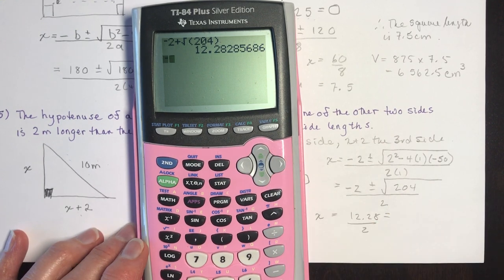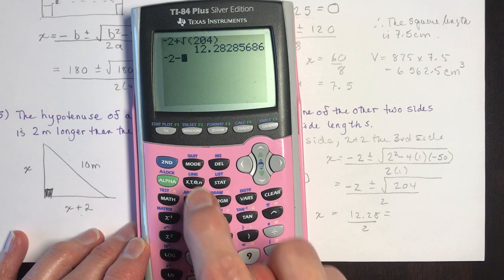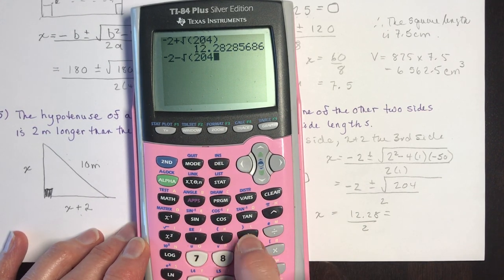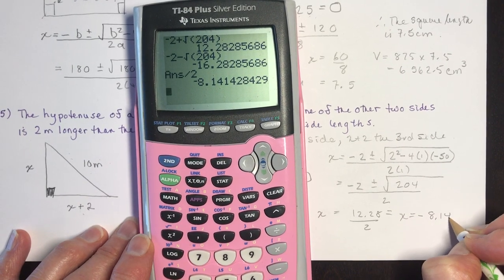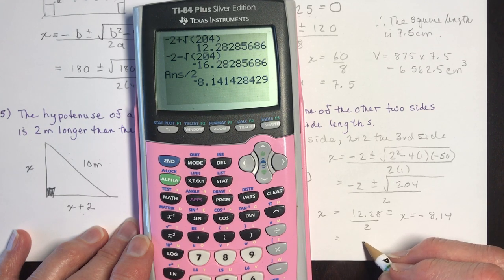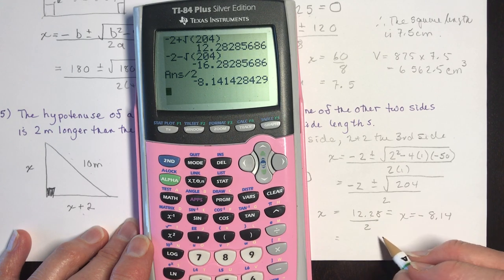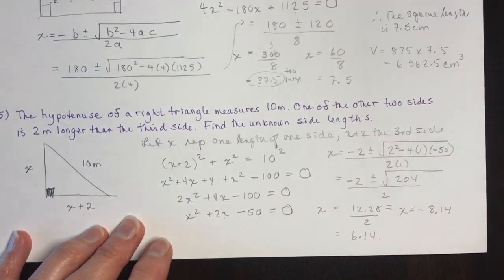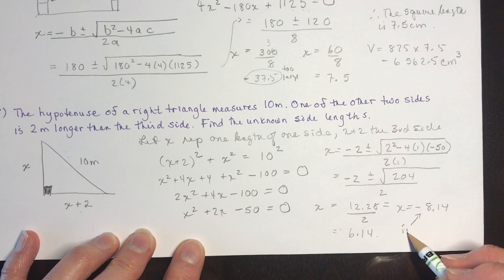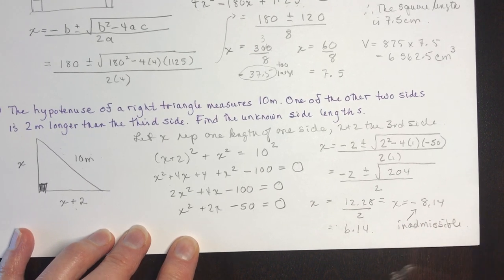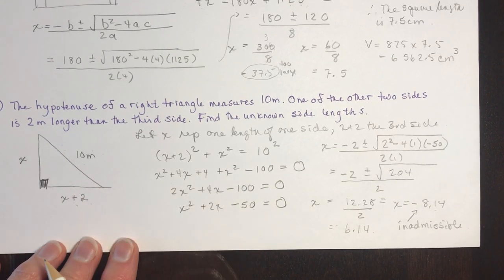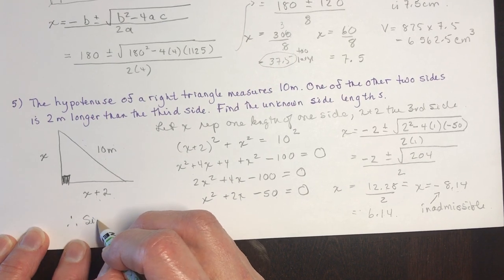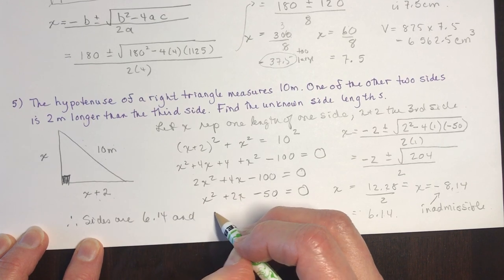For the subtraction case: negative 2 minus the square root of 204, divided by 2, gives approximately negative 8.14. That's inadmissible because we don't have negative lengths. So x equals 6.14 centimeters, and the other side is x plus 2 equals 8.14 centimeters. Therefore the two sides are 6.14 and 8.14 centimeters.